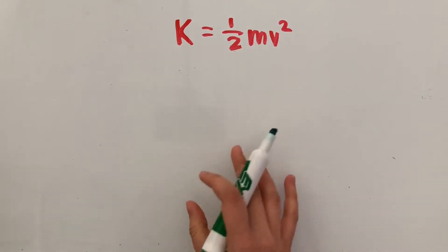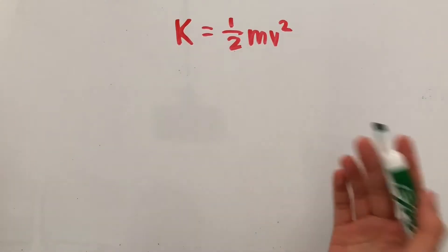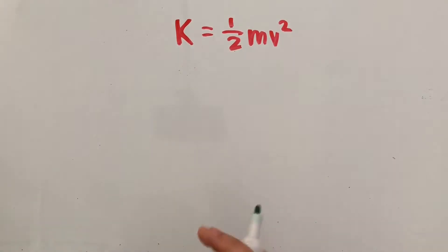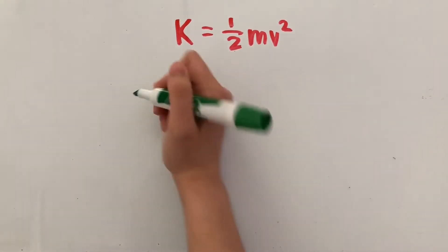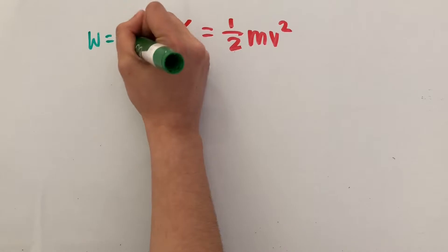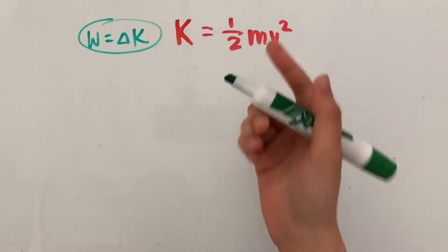Now, this equation is something that you'll have to use in many upcoming multiple-choice and free-response questions. So today, we're going to learn how to derive it with the help of acceleration. We're going to start off with the fact that work is equal to the change in kinetic energy. Remember that because we're going to go back to that later.